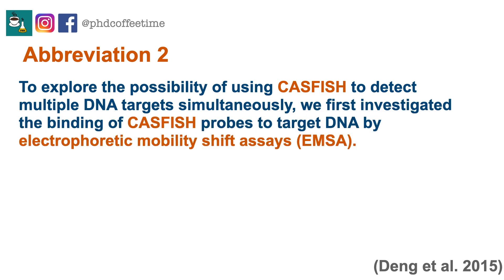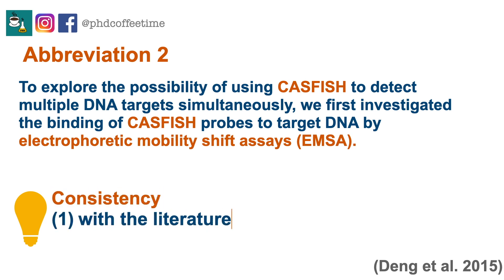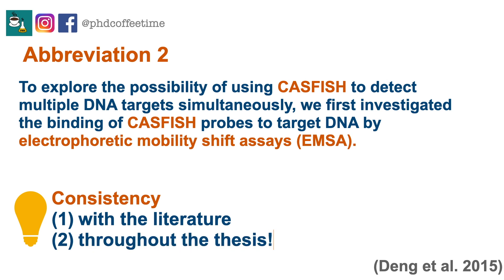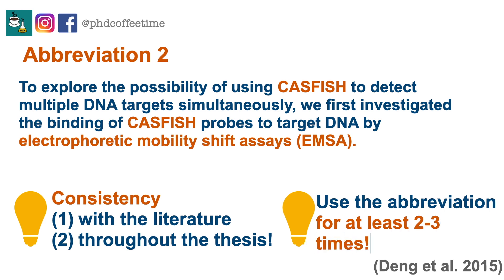Another consideration is consistency. You want to pick an abbreviation that is consistent with the rest of the literature, and also consistent throughout your thesis. If you're writing over two years, you might have changed how you abbreviate certain terms. Use Control+F to find all instances of those abbreviations and make sure you have a consistent method. Also, when using abbreviations, make sure you use each one at least two to three times in the article before abbreviating — otherwise, what's the point?